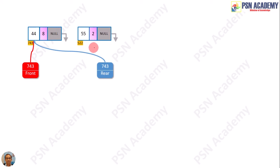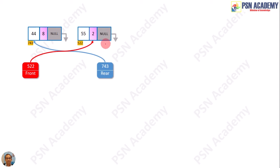In case we want to add a new node in the queue, we have to consider the priority. The existing node has priority 8, and the new node has priority 2. We consider the lower number as a higher priority. So based on this scenario, the new node should be in front of the existing node because 2 is less than 8. So the front pointer will now point to 522, and the next pointer of the new node will point to 743, making the new node the first node.